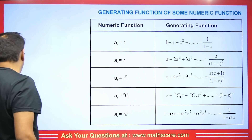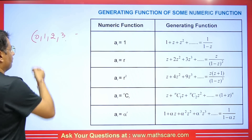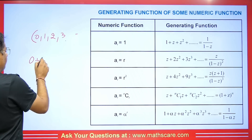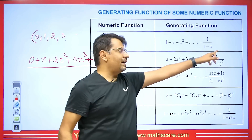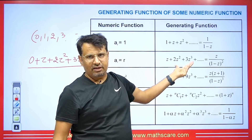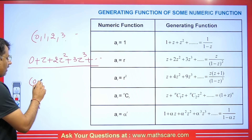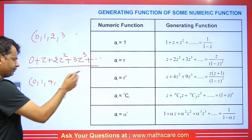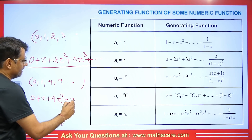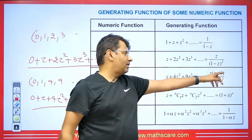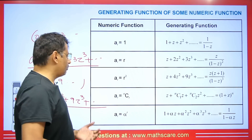If AR = R, the numeric function is 0, 1, 2, 3, ... Multiplying by Z^R gives 0 + Z + 2Z² + 3Z³ + ... The sum of this series is Z/(1−Z)². Similarly, for AR = R², the numeric function is 0, 1, 4, 9, ... giving the series 0 + Z + 4Z² + 9Z³ + ..., and its sum is Z(Z+1)/(1−Z)³.